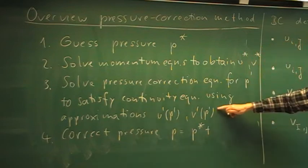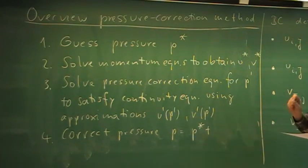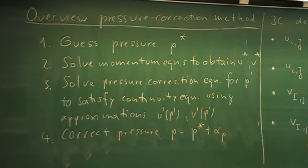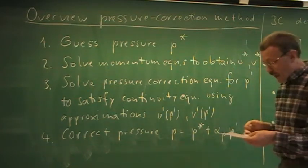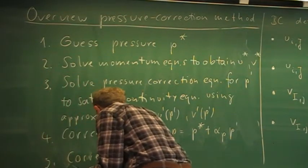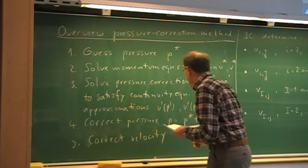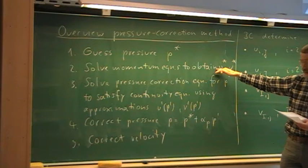The goal is that in the end we satisfy the continuity equation — that is our criterion. When we have done that, we correct the pressure with this pressure correction P-prime. We take the preliminary pressure — in the beginning it is the one we have guessed, later on the most current pressure available — and then because these approximations are not exact, we do not correct fully with P-prime but only partly. That is called under-relaxation, using an alpha_P smaller than 1, giving us an updated corrected pressure.